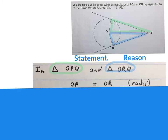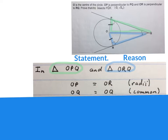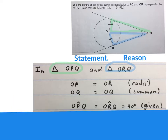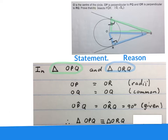We start by saying: OP is equal to OR — they are radii from there to there and from there to there. Next we can write OQ is equal to OQ; it's common — both triangles are using this line. Next we can say angle OPQ is equal to 90 degrees — it was given. Those two angles are each 90 degrees. So triangle OPQ is congruent to triangle ORQ.